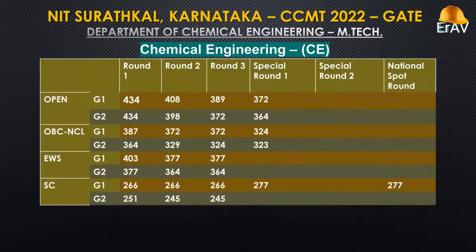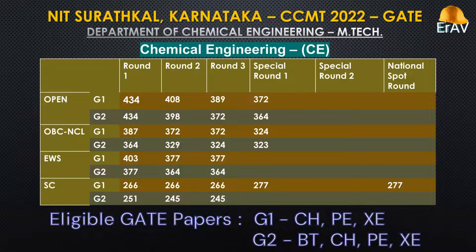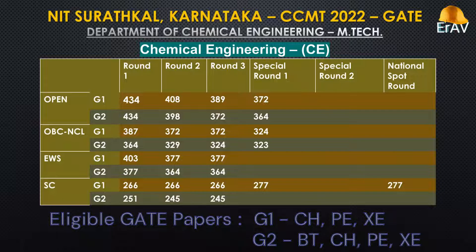Chemical Engineering eligible GATE papers: Group 1 — Chemical (CH), Petroleum (PE), Engineering Sciences (XE). Group 2 — Biotechnology (BT), CH, PE, XE.